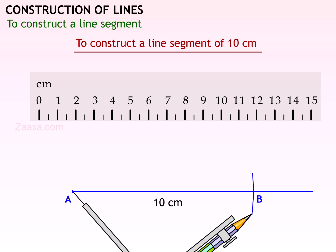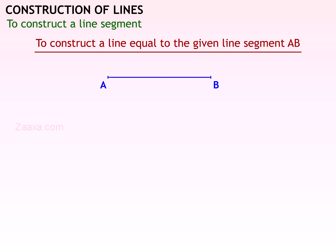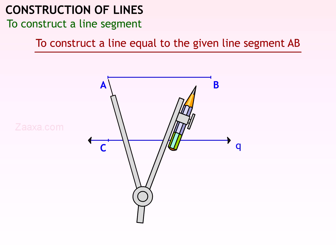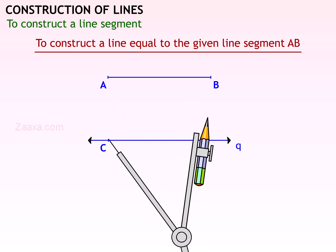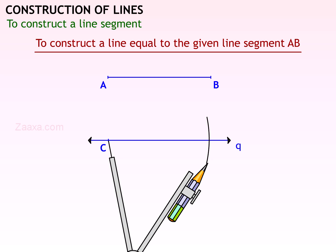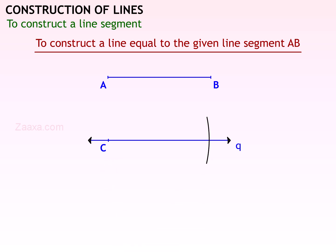Name the point where the arc intersects the line as B. You have constructed a line segment of length 10 centimeters. To construct a line equal to a given line segment AB, draw a line Q and mark a point C on it. Measure the line segment AB with the pair of compasses. Without changing the width of the compasses, place the metallic tip on C and cut an arc on the line Q. Name the point of intersection as D.